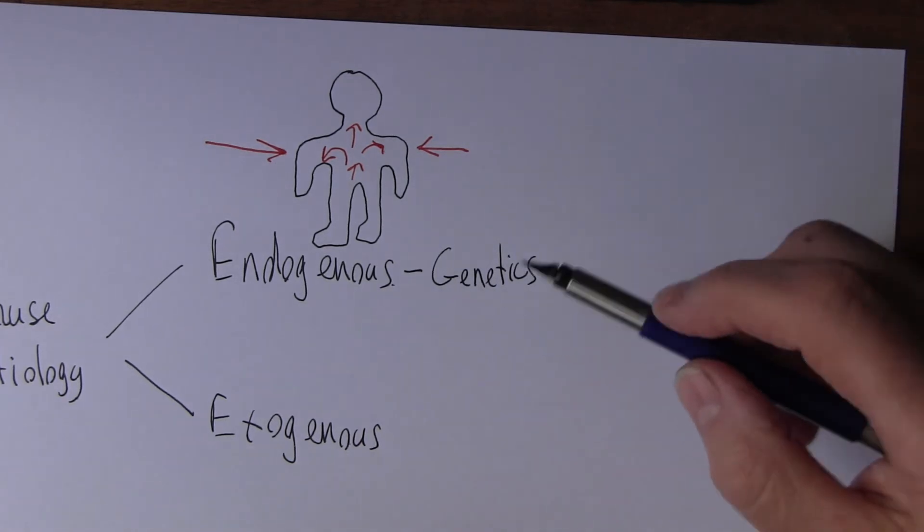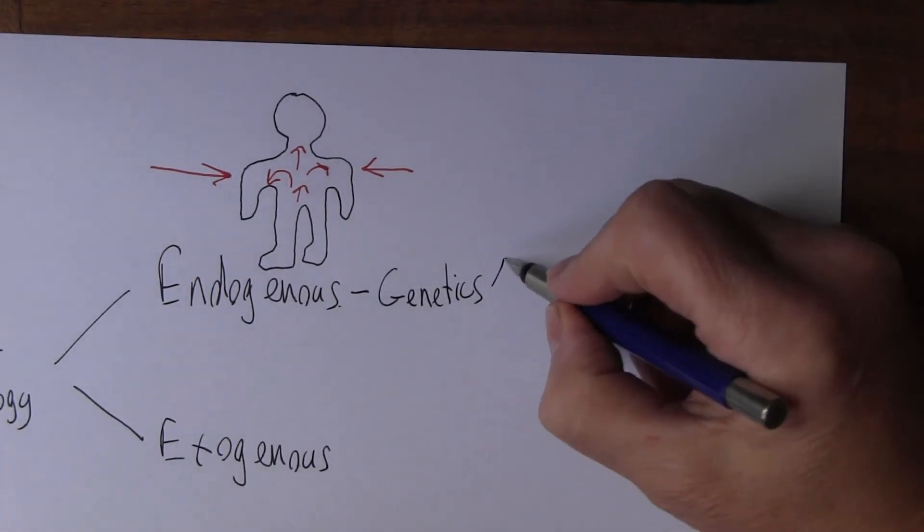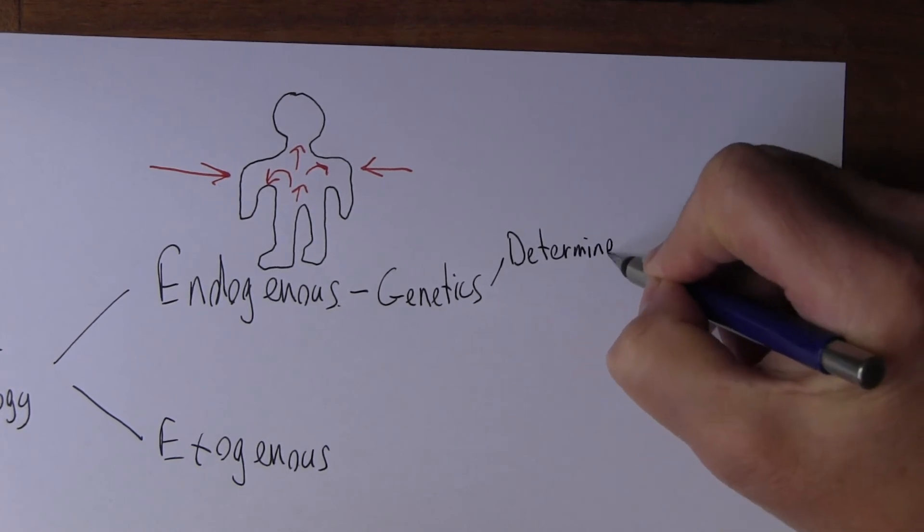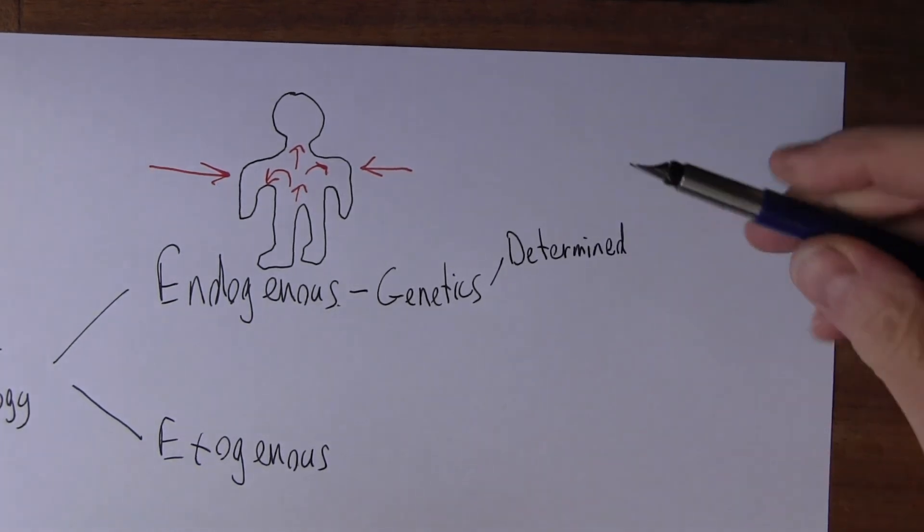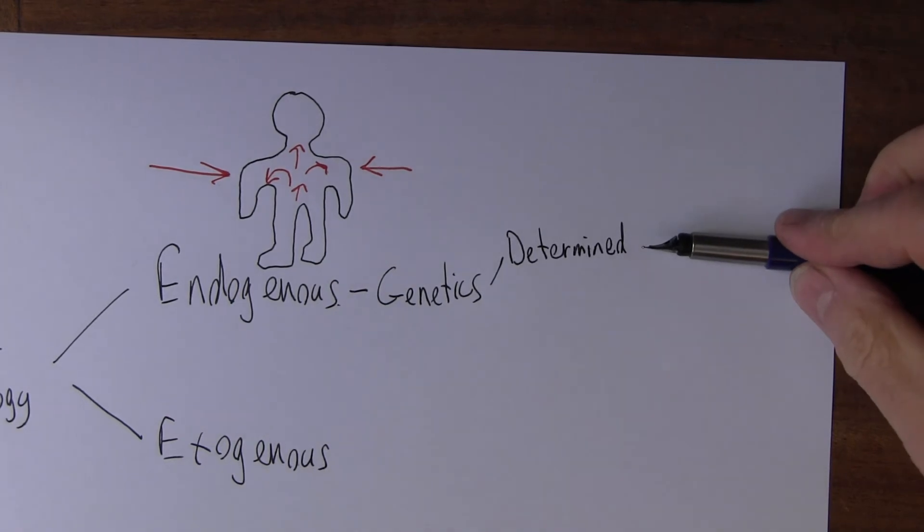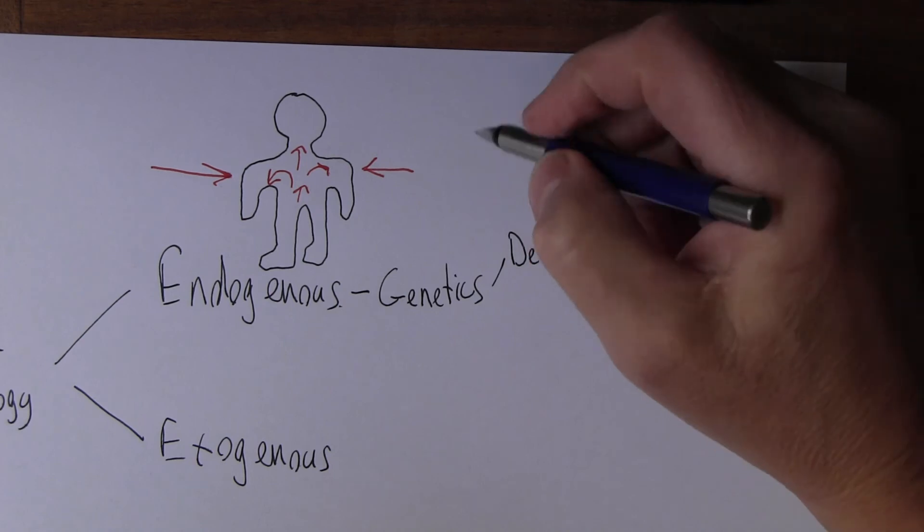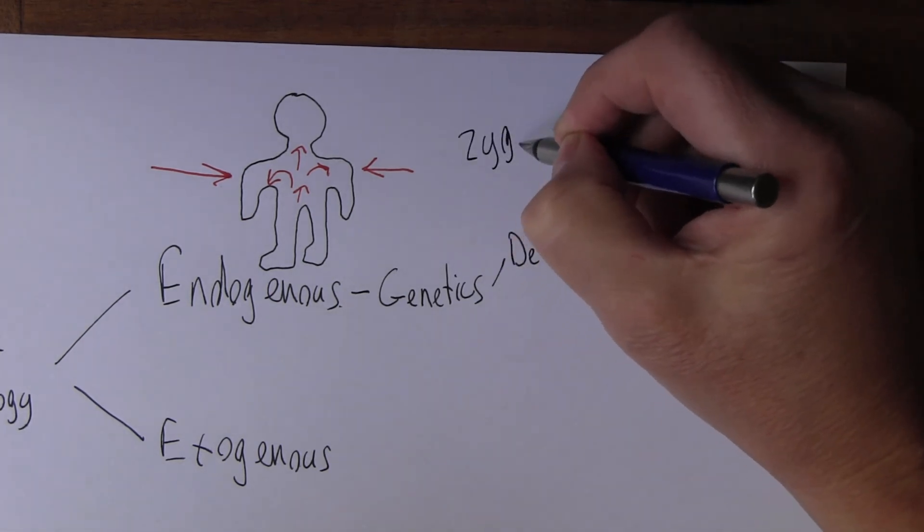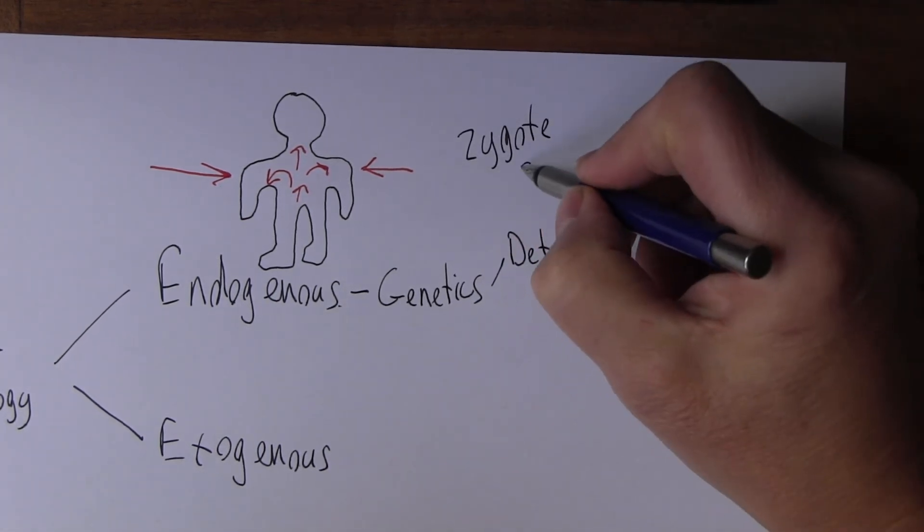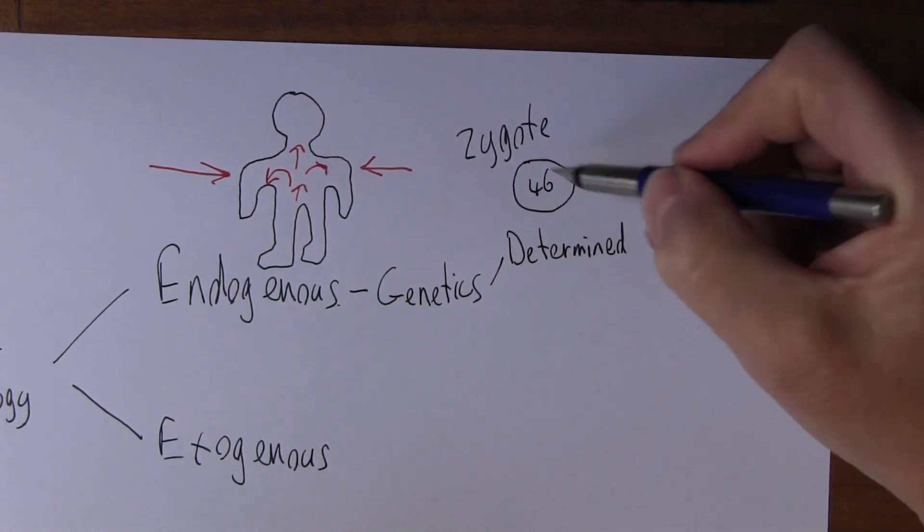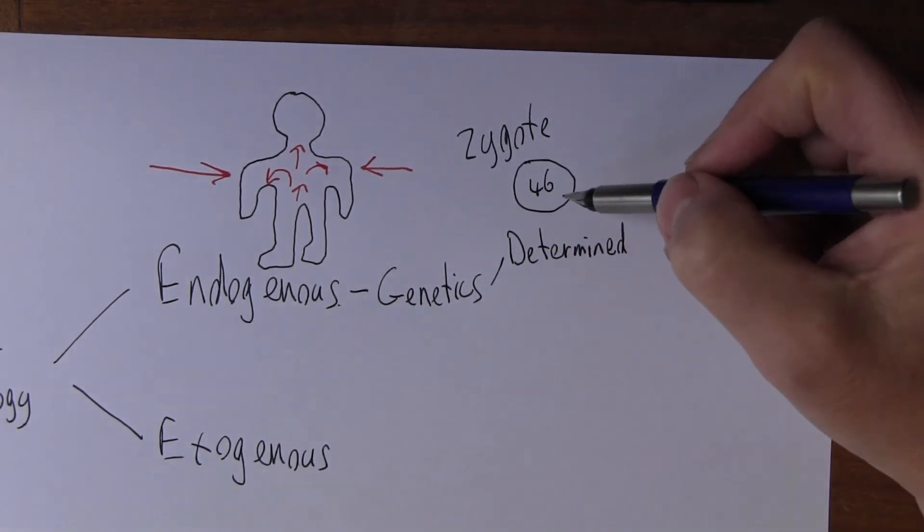But of course it always gets more complicated. We can talk about genetics which are determined, and this is very much the older view of genetics - that you're born with the genes you're born with. In fact it goes right back to when you're a zygote, that very first fertilized cell that was you with the 46 chromosomes.